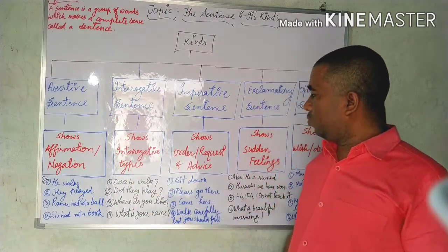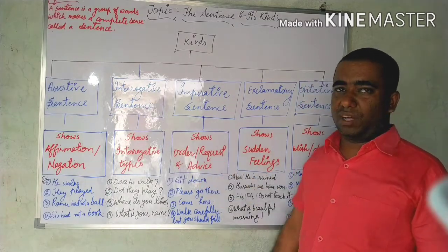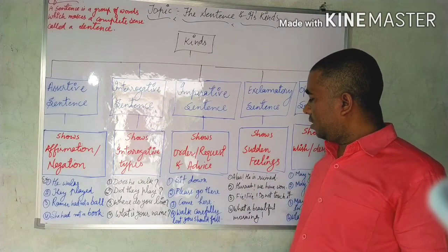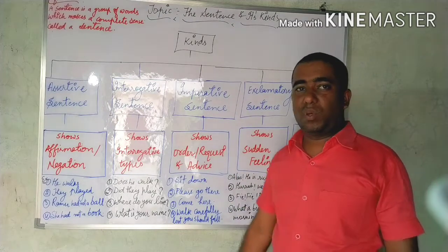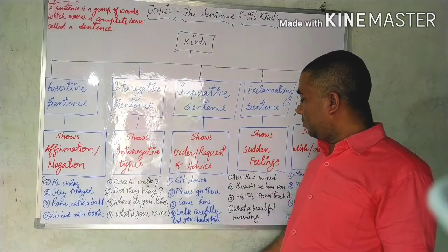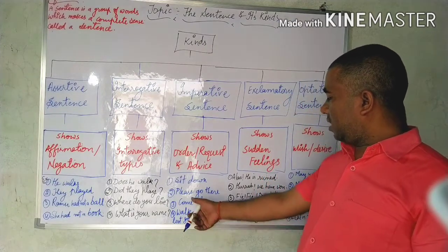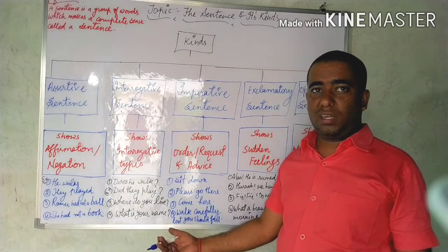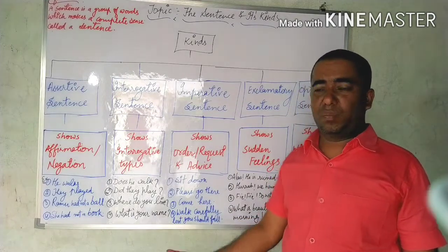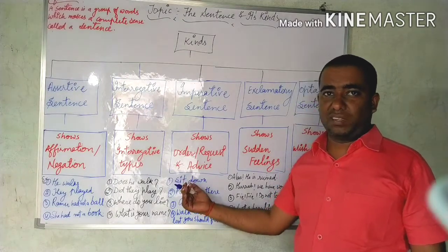The third kind is the imperative sentence. It shows order, request, and advice. The first example is 'Sit down' — it is an order because 'you' is hidden in this sentence. The second is 'Please go there' — 'please' is added so it is a request. 'Come here' is also an order. Note that 'you' is always hidden in imperative sentences.